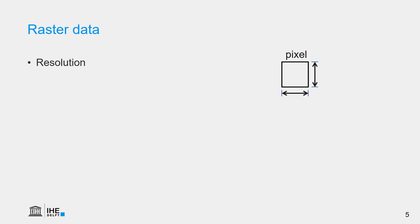The pixels in raster data have a spatial resolution. Spatial resolution is the width and the height of a pixel. In this lecture, we will talk about square pixels. Of course, many other shapes exist, but the basic form that you will mostly encounter is square pixels.